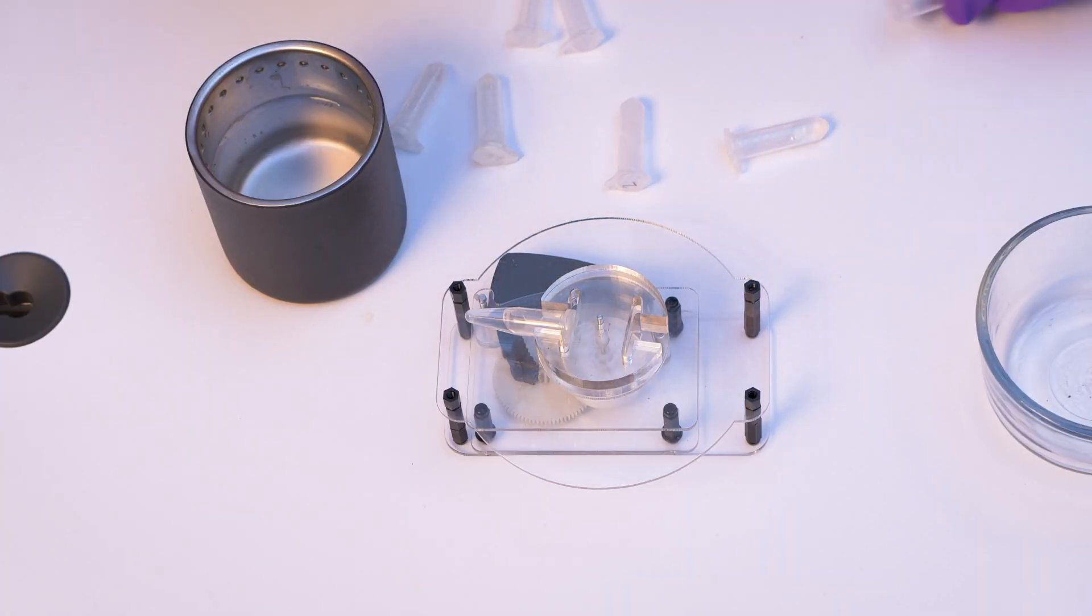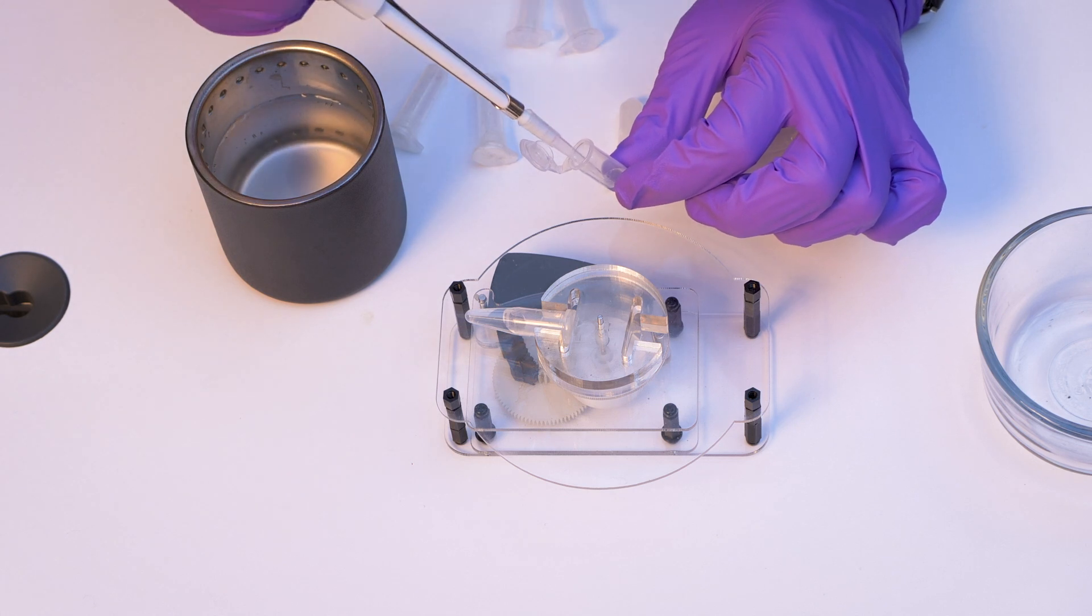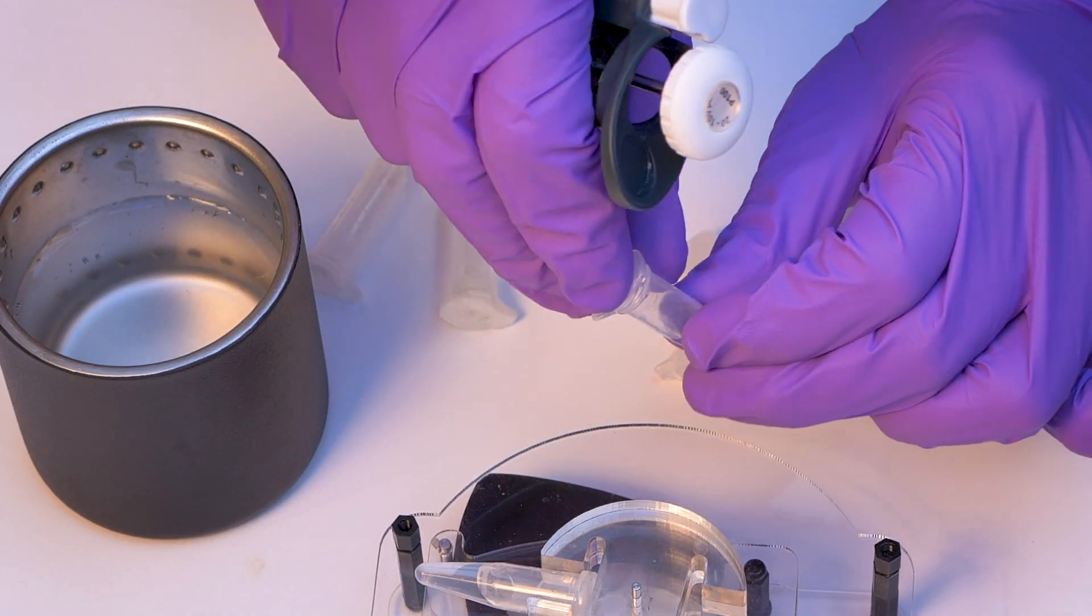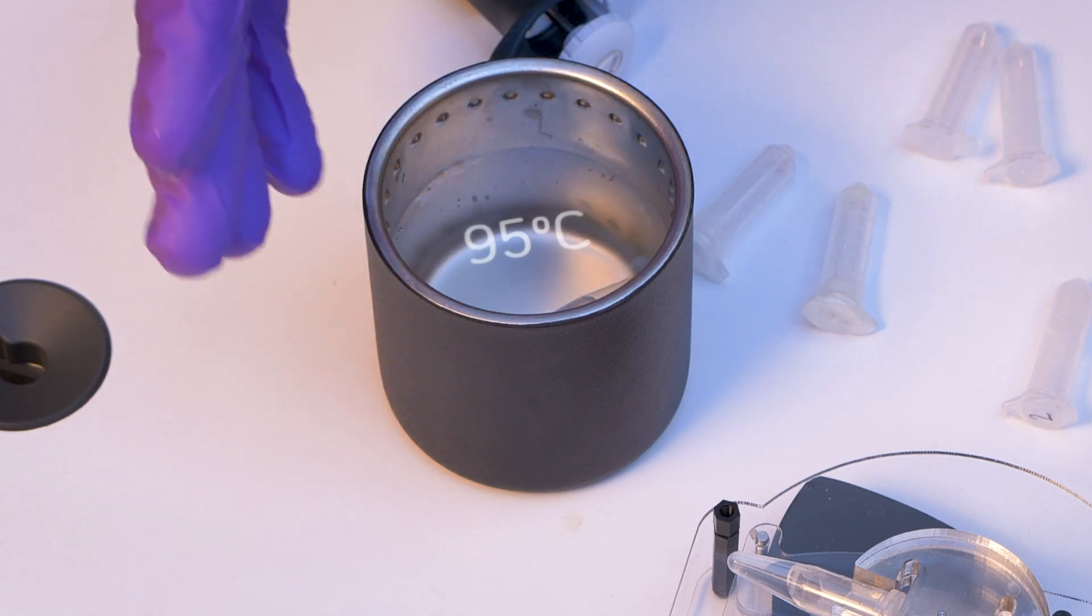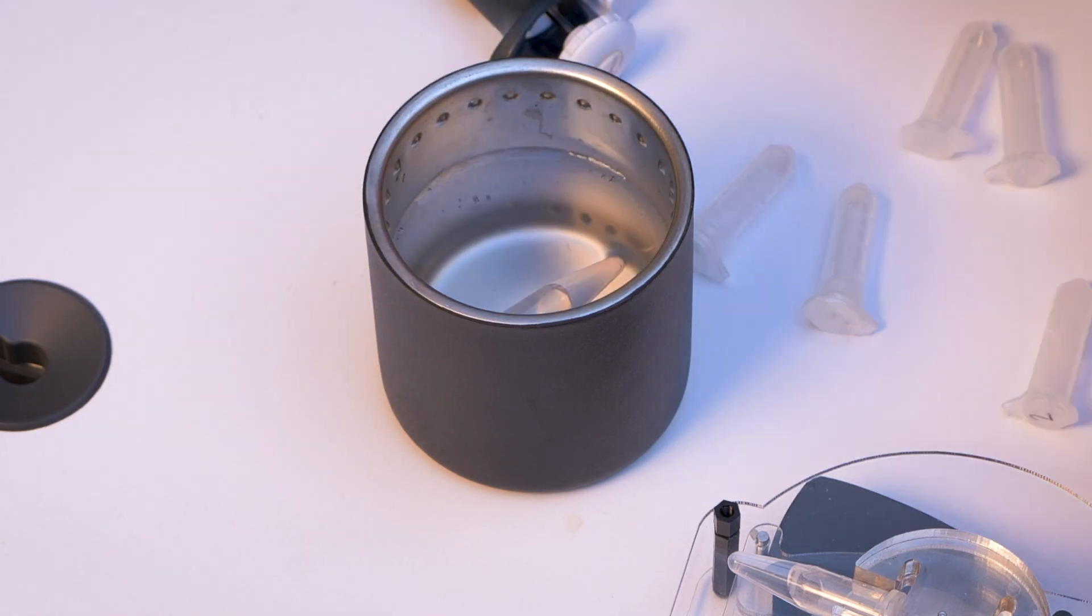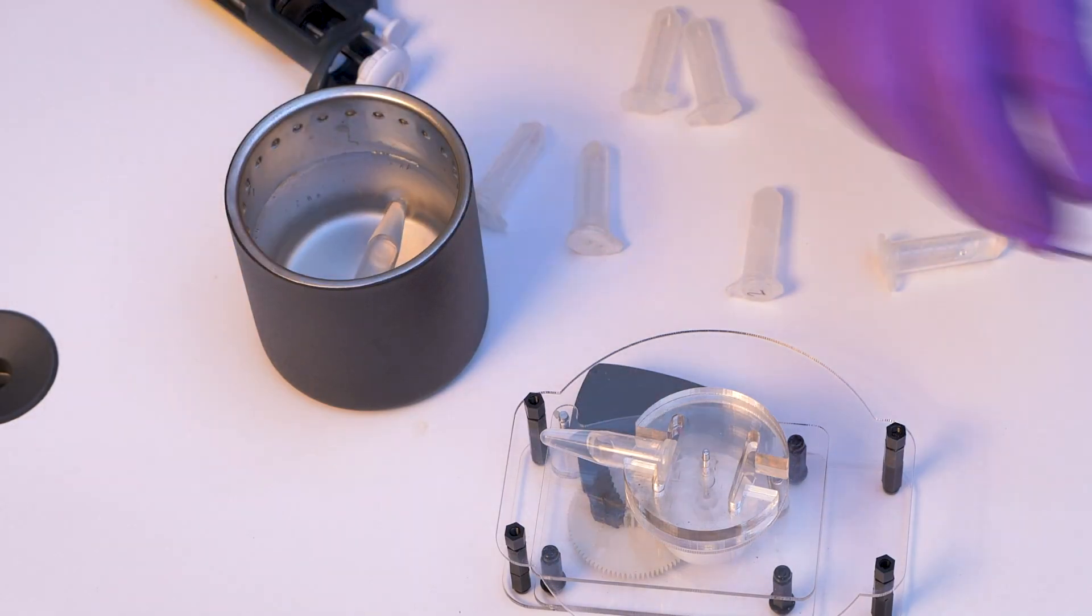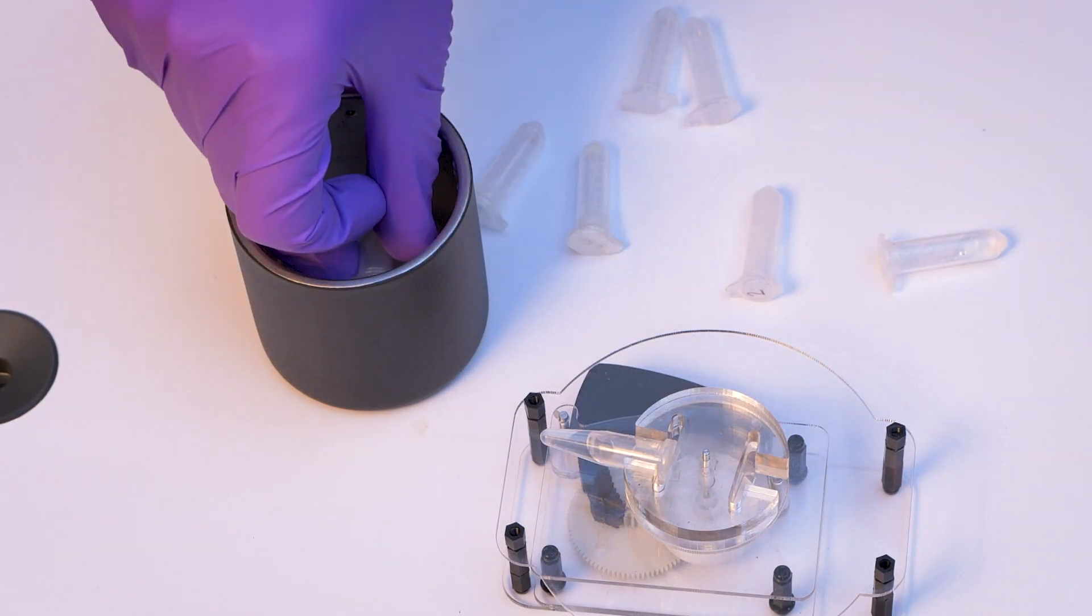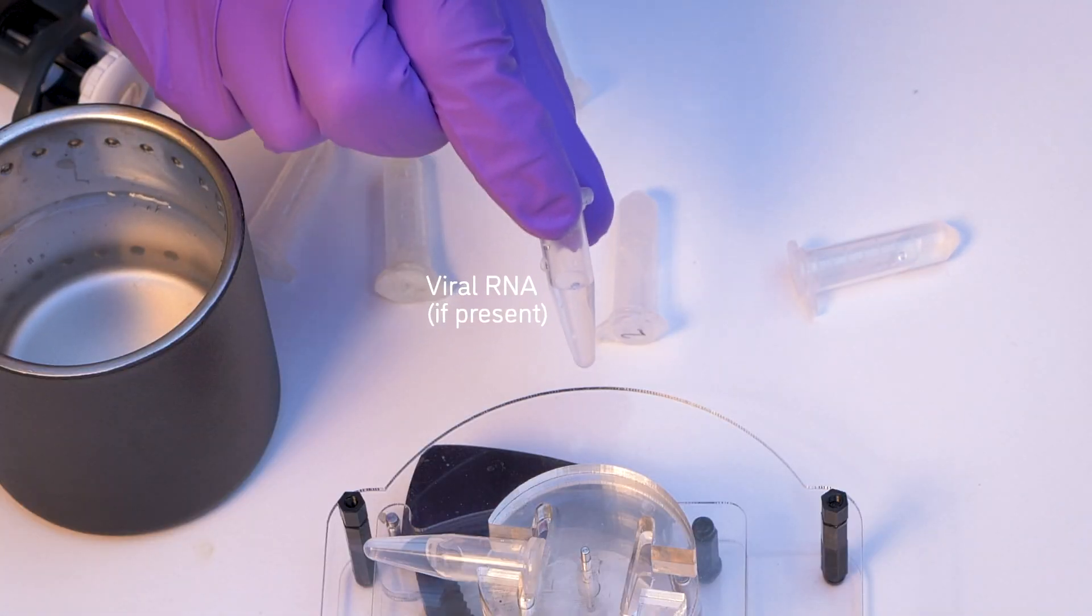It will break open the cells, releasing the viral RNA, which is what we are going to detect in the end, as well as keep that RNA from being degraded. So now that we have added this reagent, we're going to boil it in water at 95 degrees Celsius for five minutes. After this, the sample is completely inactivated, so there's no infectious virus left. But the RNA of the virus is stable.